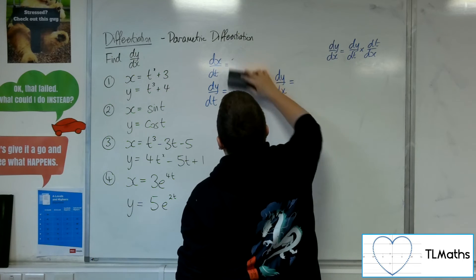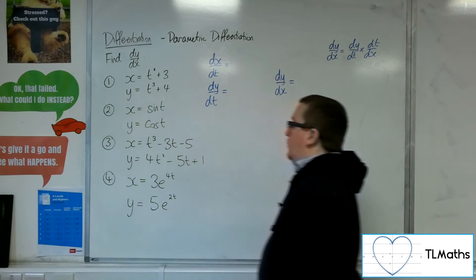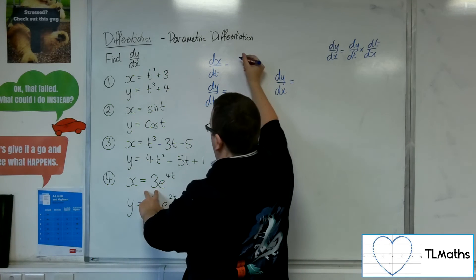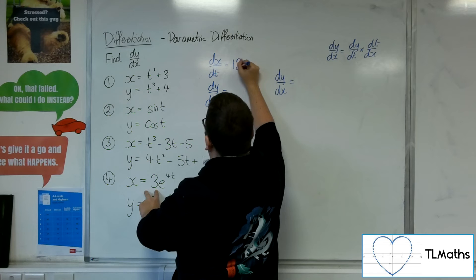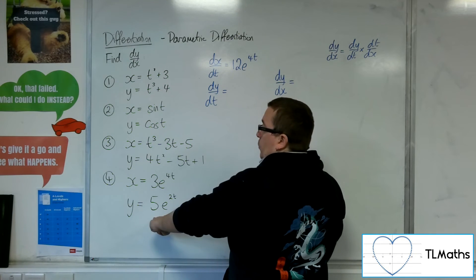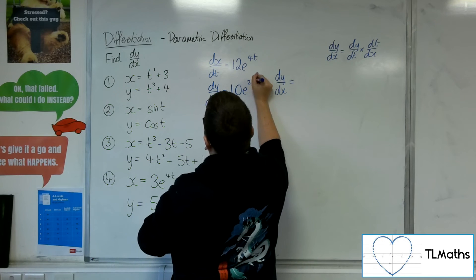So finally, number 4. x equals 3e to the 4t. So dx by dt is 12e to the 4t. And if y equals 5e to the 2t, then dy by dt is 10e to the 2t.